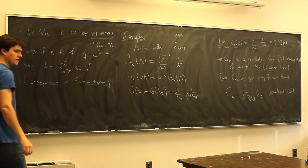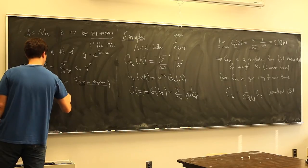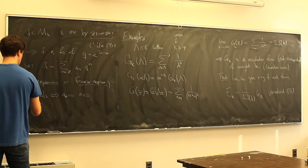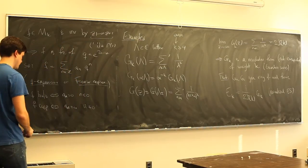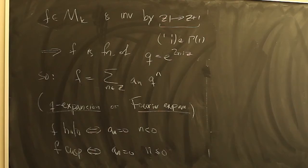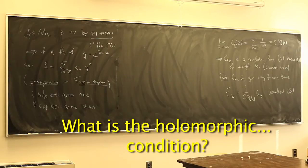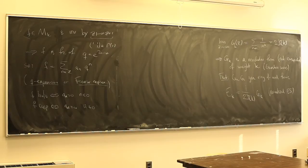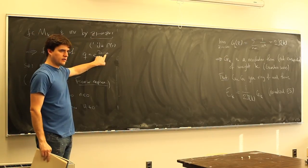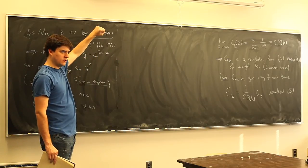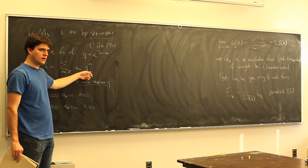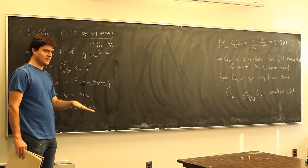The condition that f is holomorphic means the coefficients a_n vanish for n < 0. Being a cusp form means a_0 = 0 as well. In the upper half plane, |q| = |e^{2πiz}| < 1 since the imaginary part of z is positive, and as z → i∞, q → 0 very fast. So positive-power terms die, negative-power terms explode — if you want it to be nice at infinity, you need no negative terms.